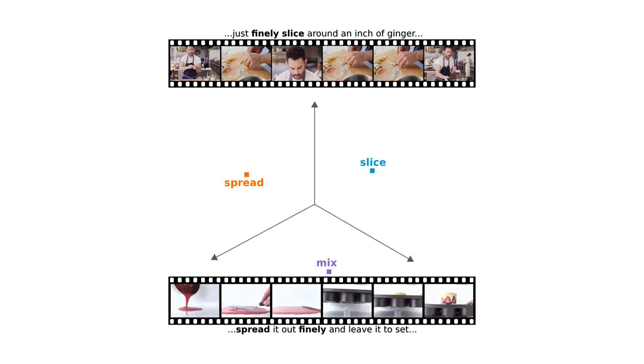We propose to learn a video-text embedding space from weakly supervised action-adverb pairs in the narrations of instructional videos.